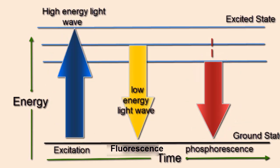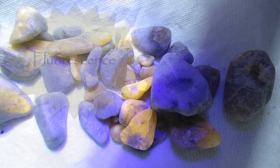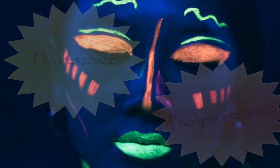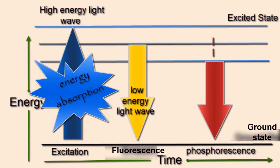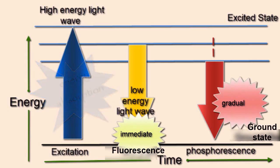Specifically in this discussion we're looking at minerals. Broadly speaking, there are different types of luminescence in minerals, with fluorescence and phosphorescence being the two most commonly discussed. Both types of luminescence involve the absorption of energy and subsequent emission of light, but they differ significantly in their duration and the mechanisms involved.